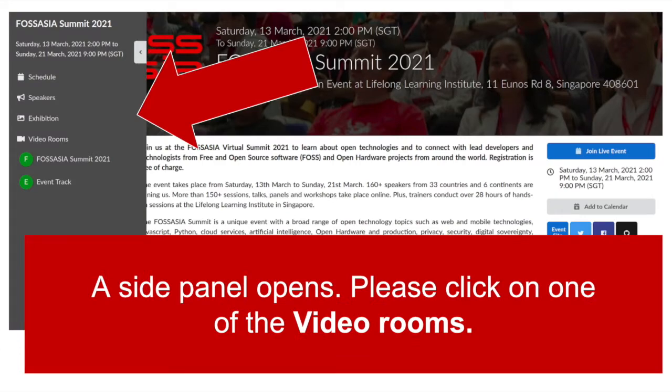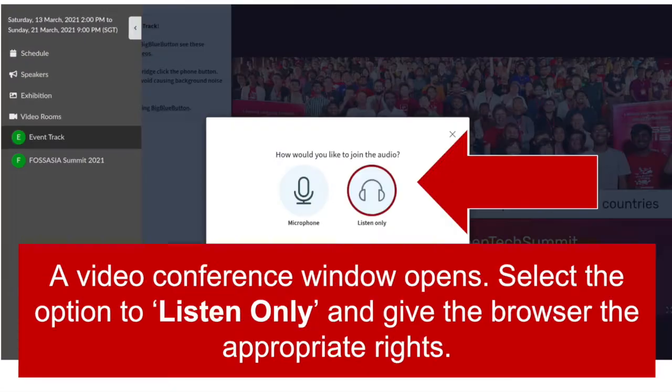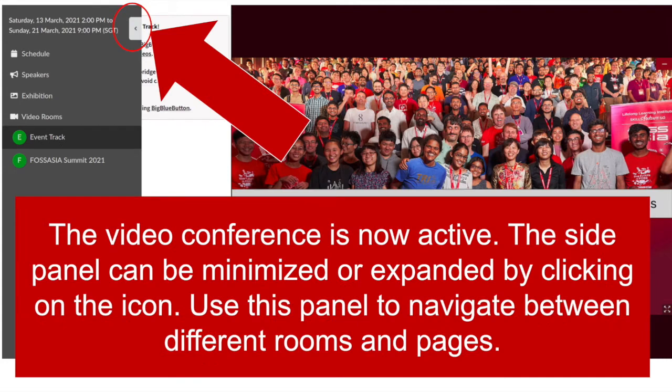A side panel opens. Please click on one of the video rooms. A video conference window opens. Select the option to listen only, and give the browser the appropriate rights. The video conference is now active.